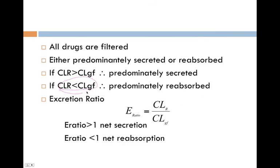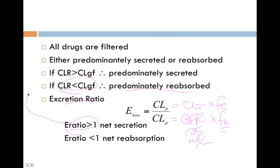So if renal clearance is less than filtration clearance, then it's predominantly reabsorbed. So this gives us a little ratio to look at. An E ratio is renal clearance to filtration clearance. Renal clearance, remember again, is our total body clearance times the fraction excreted unchanged in the urine. Our filtration clearance is just GFR, which we usually use 125 mL per minute, times the fraction unbound because only a free drug can make it through that filter. If the E ratio is greater than one, that's the same thing as this, isn't it?